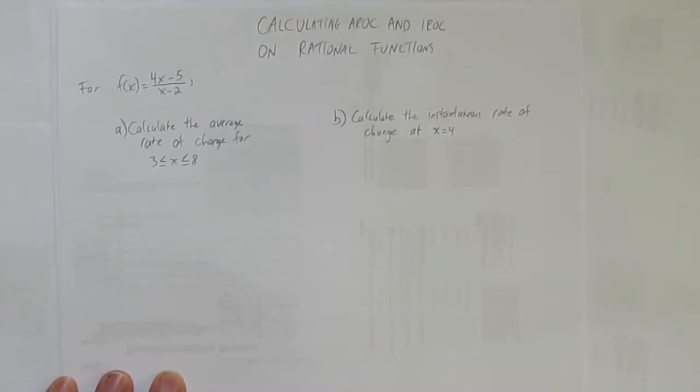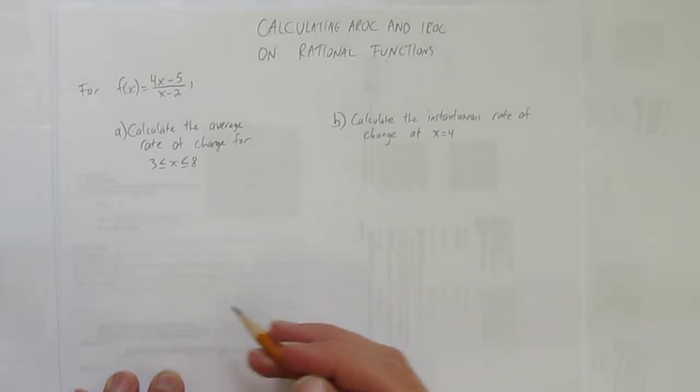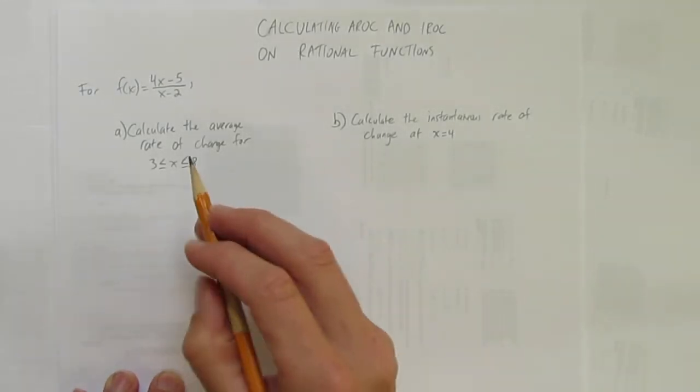In this video, we'll look at calculating the average rate of change and instantaneous rate of change on rational functions. I recommend that you've already watched how to calculate AROC and IROC on polynomial functions in another video of mine. Though this really isn't much harder, it's basically the same work but with a little more complicated numbers, but that shouldn't deter you. Let's get started.